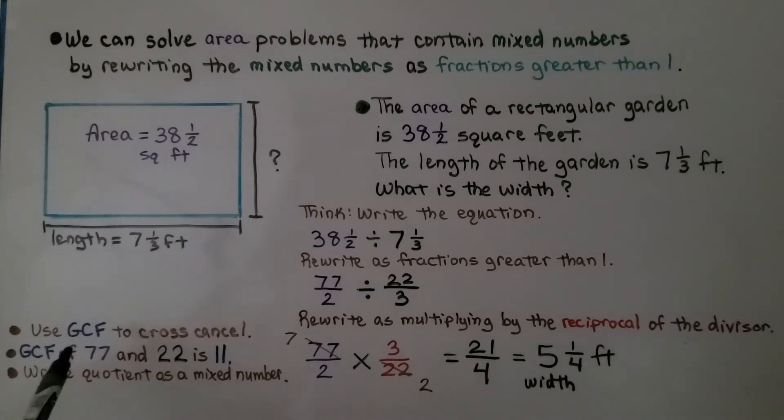Using GCF to cross cancel, we can see 77 and 22 have 11 as their greatest common factor. 7 times 11 is 77 and 2 times 11 is 22. So this cancels out to be a 7. This cancels out to be a 2.